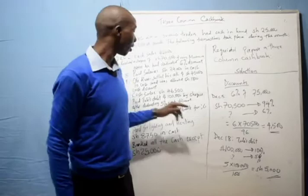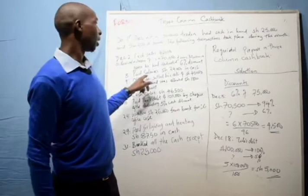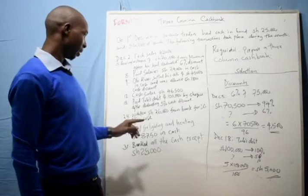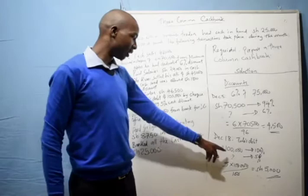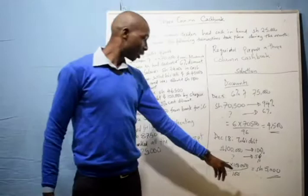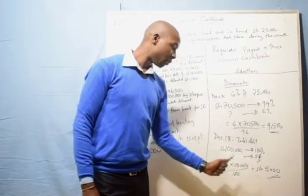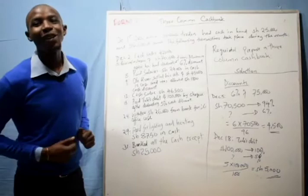The 4,500 is the discount amount that was allowed to Mwawura. Then on December 18th, we paid a debt of 100,000. So we are going to calculate 5% of 100,000. Since 100,000 represents 100%, we say: 5 times 100,000 divided by 100, which equals 5,000. So now I want to show you something regarding the 3-column cash book.